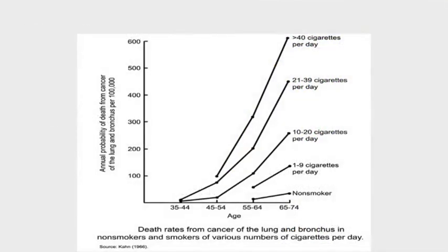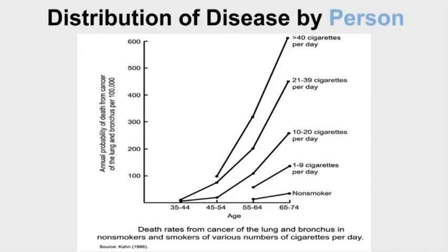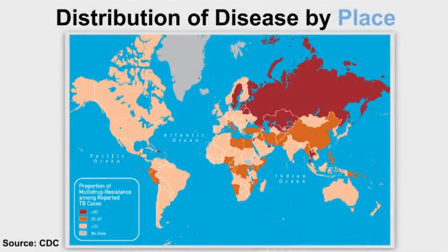This graph shows lung bronchus cancer risk by amount of smoking per day. This is an example of looking at a distribution of disease by person; personal characteristics include age category and smoking history. This map shows the estimated tuberculosis incidence rates in 2010 by country, and is an example of examining the distribution of disease by place.